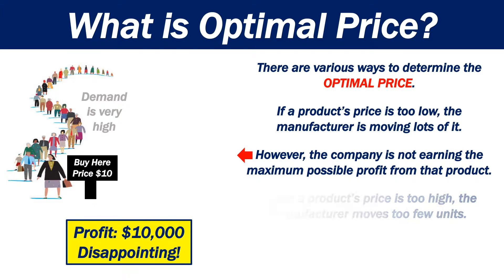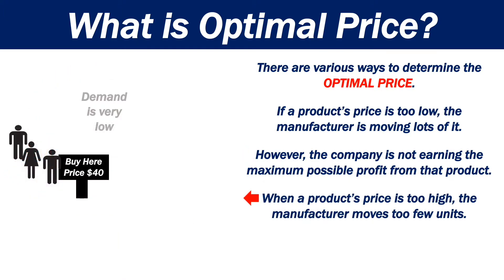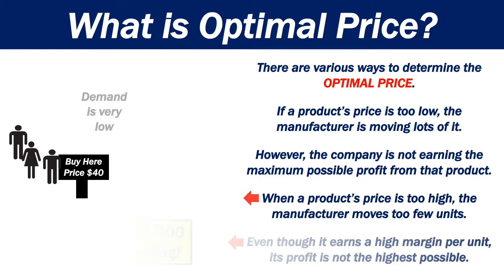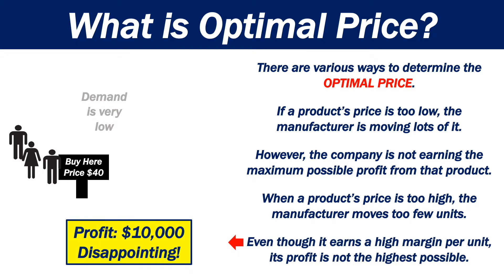When a product's price is too high, the manufacturer moves too few units. Even though it earns a high margin per unit, its profit is not the highest possible.